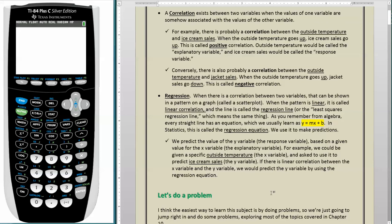For example, we could be given a specific outside temperature, which again is the x variable, and asked to use that to predict ice cream sales, or the y variable. If there is linear correlation between the x variable and the y variable, we would predict the y variable by using the regression equation.